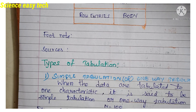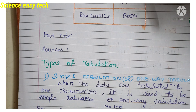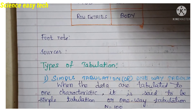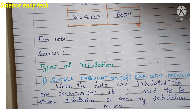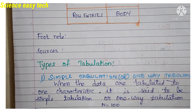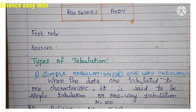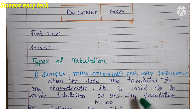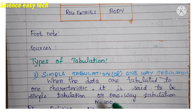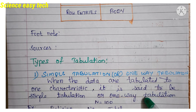Next, the types of tabulation. There are three types: simple tabulation or one-way tabulation, double tabulation or two-way tabulation, and complex tabulation. Simple tabulation, or one-way tabulation, is when the data are tabulated according to only one characteristic.